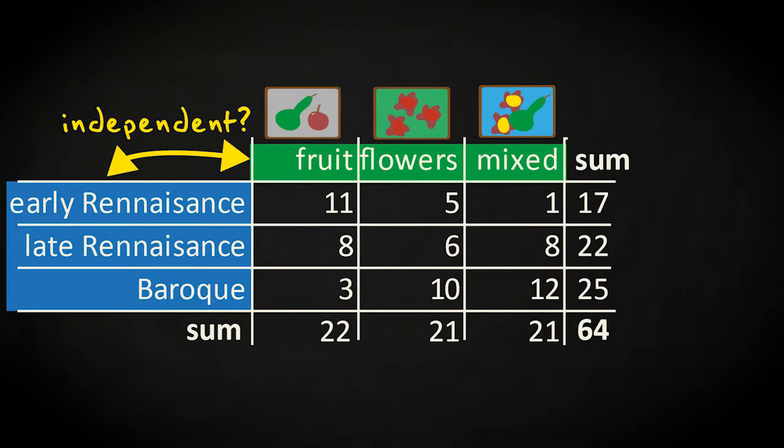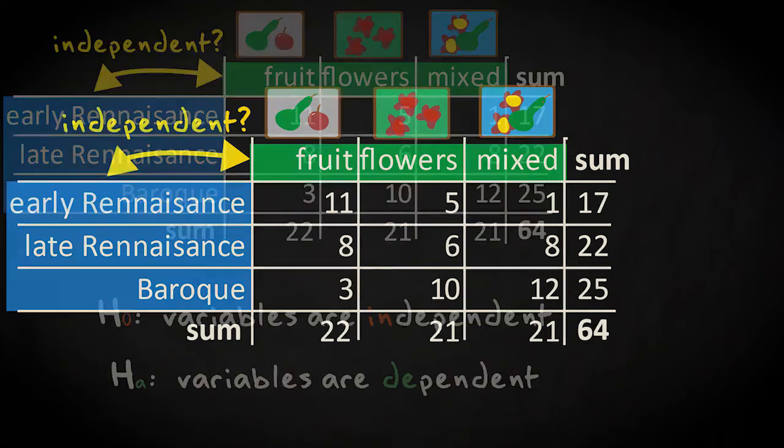The null hypothesis for such a question is that the variables are independent, and the alternative hypothesis is that they are not. It's noteworthy that there is no possibility to formulate a one-sided hypothesis here.